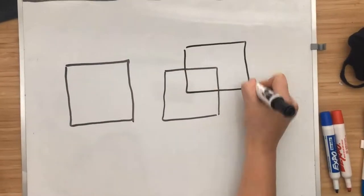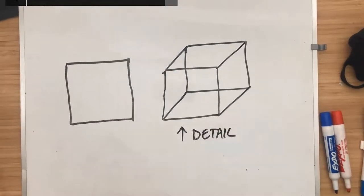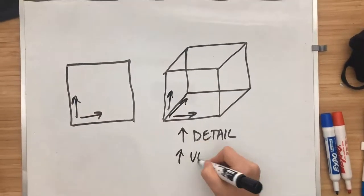Consider this square and this cube. In the cube, we clearly have more detail, and thanks to the added dimension, we also have a greater volume.